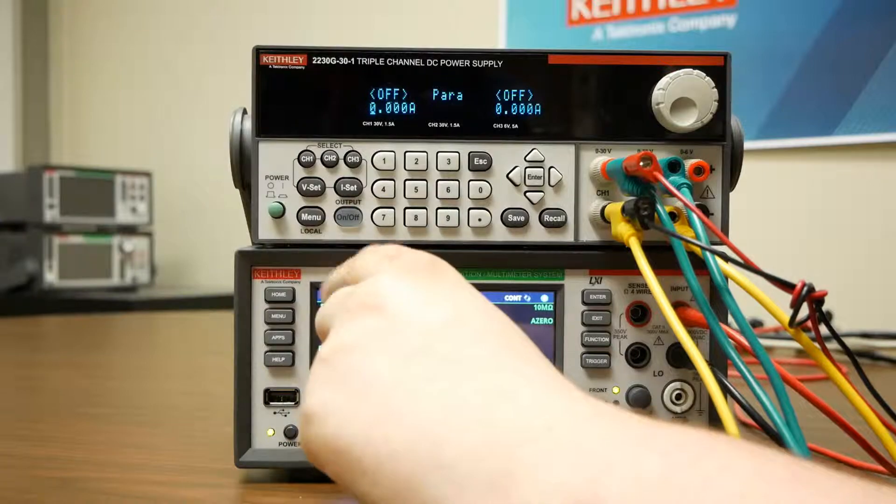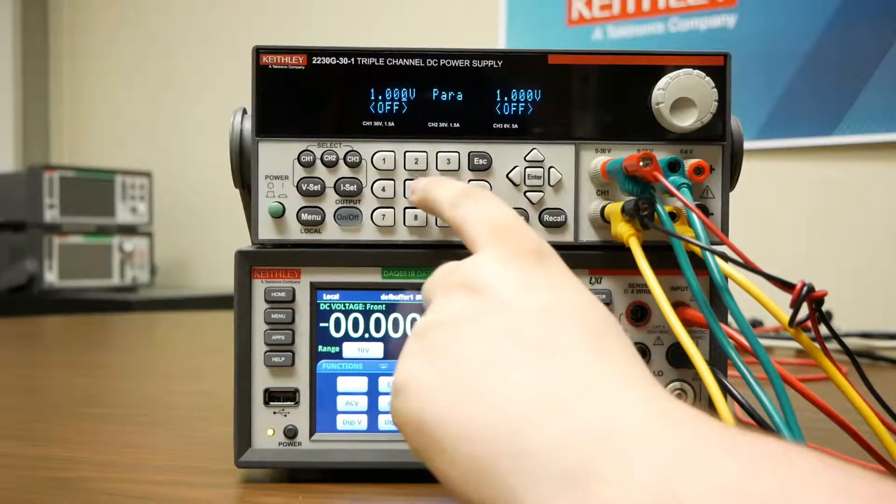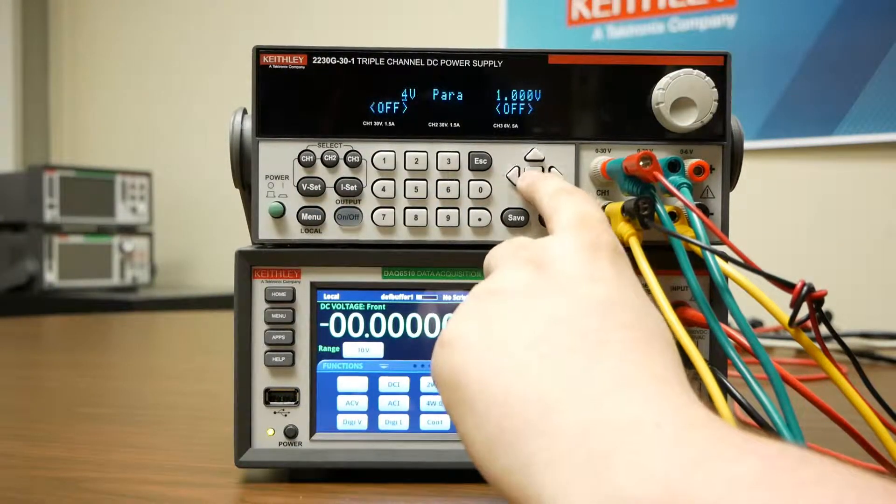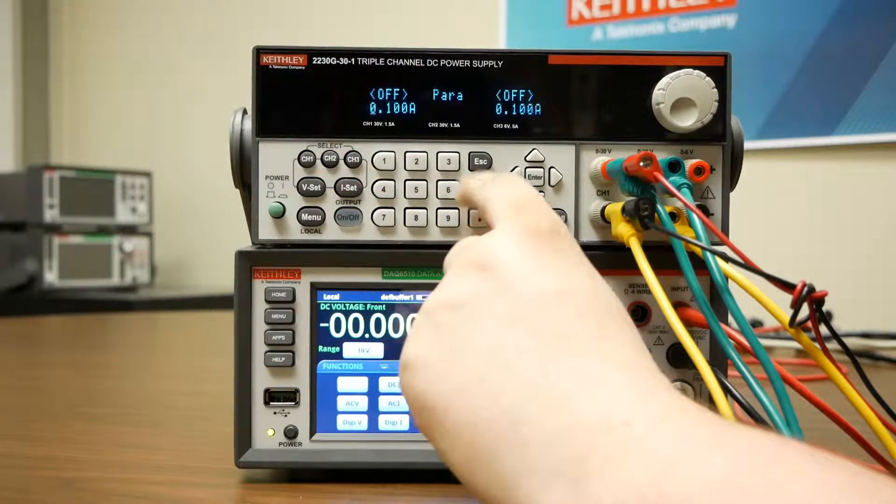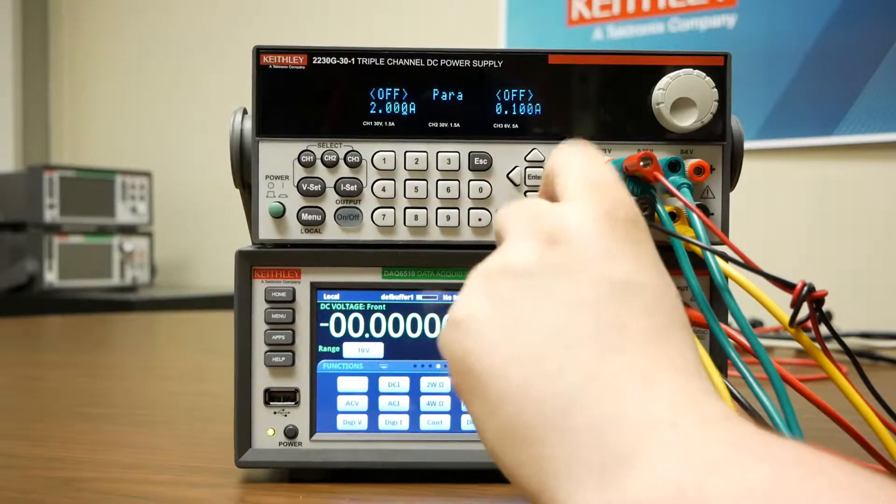We'll then select channel 1 select and VSET. We'll set this to 4 volts and press enter, and then channel 1 select ISET, and choose 2 amps, and press enter.